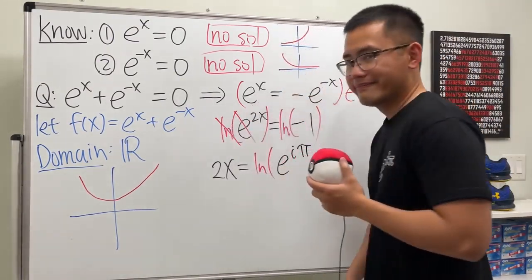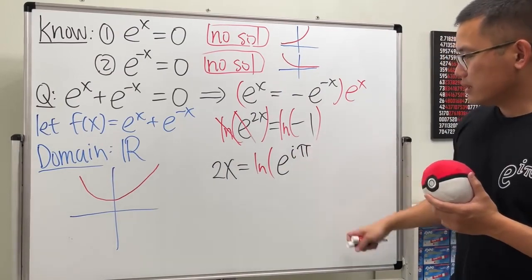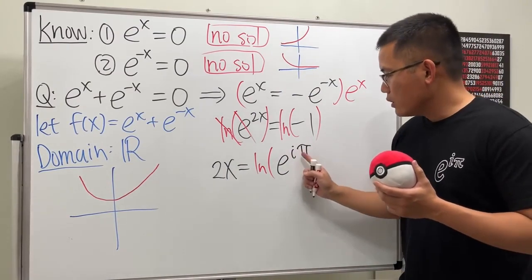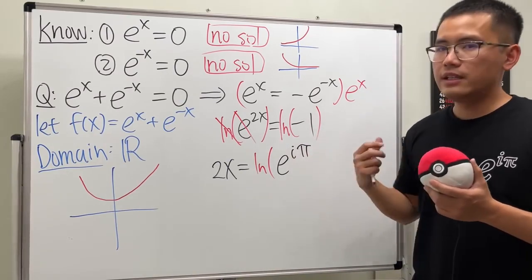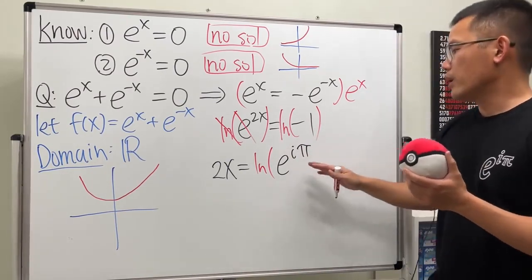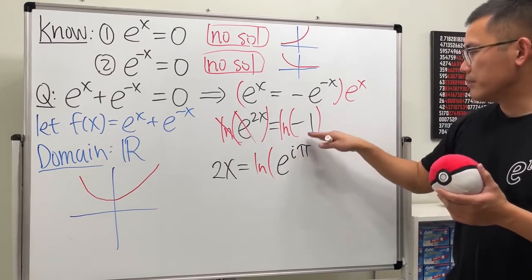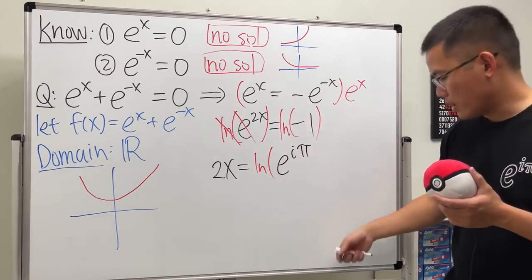That's the proof, but the truth is this is not the only way to get negative 1, because π is not the only angle in the polar plane that will give you this complex number to end up with negative 1.